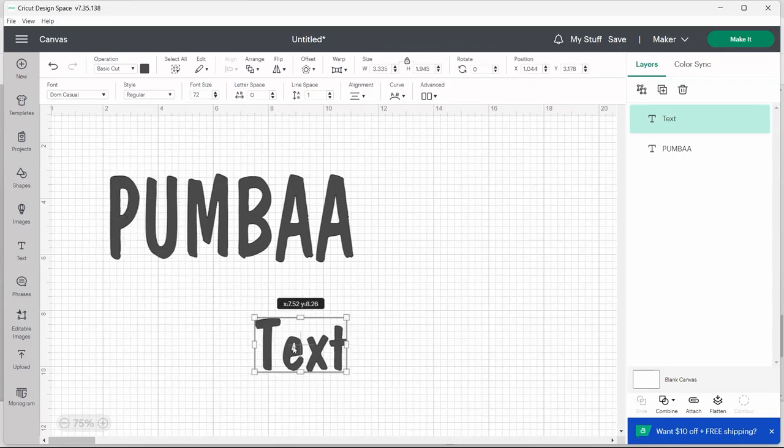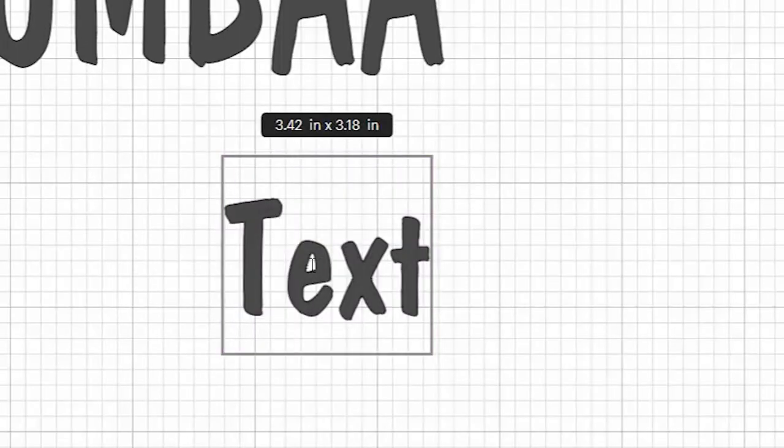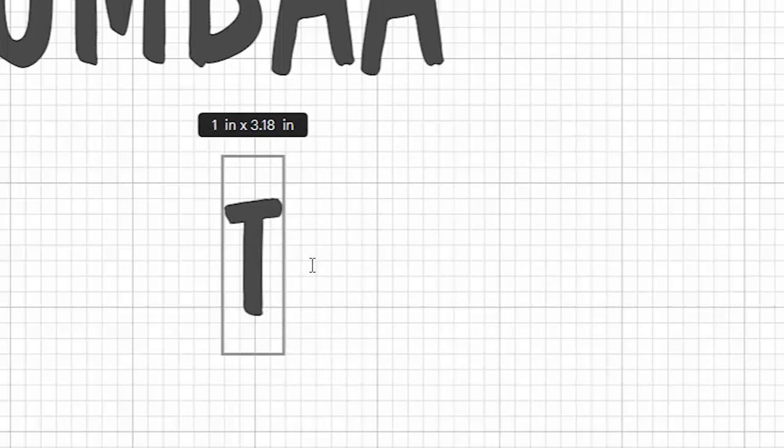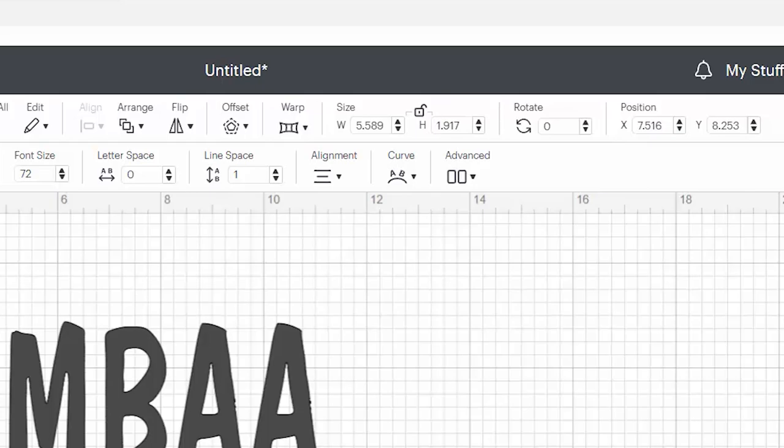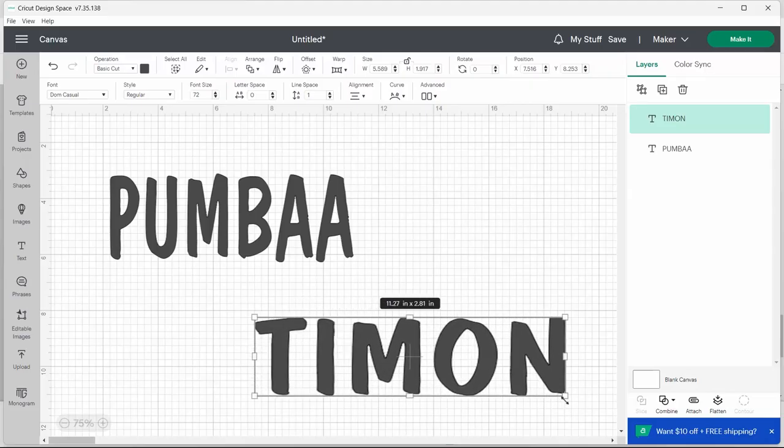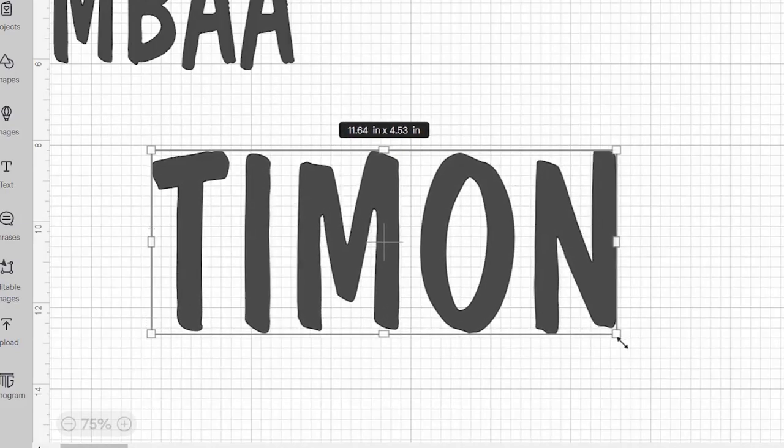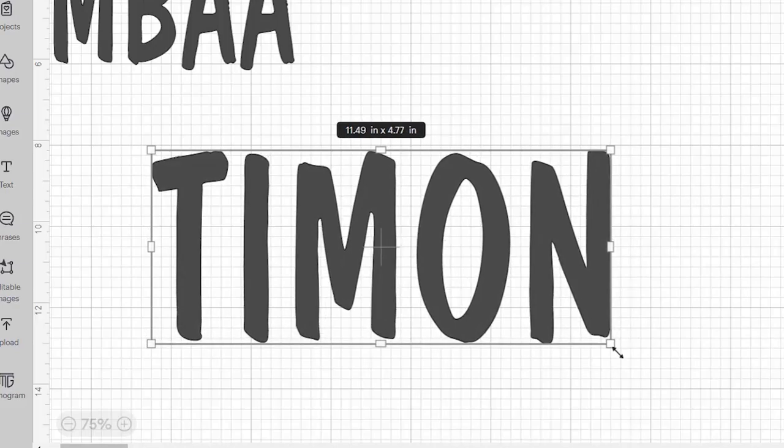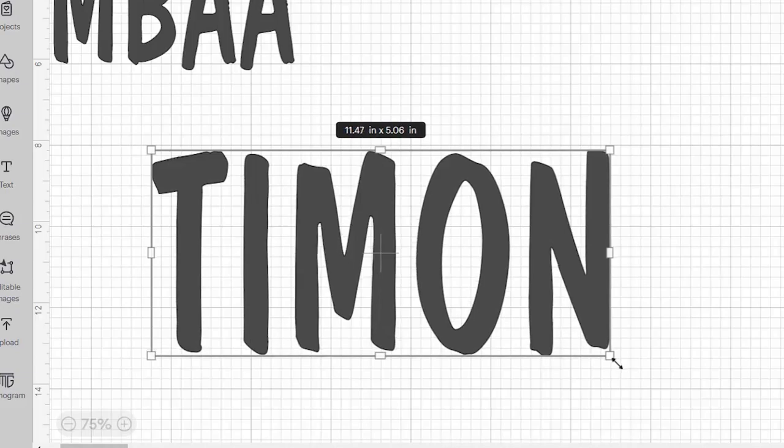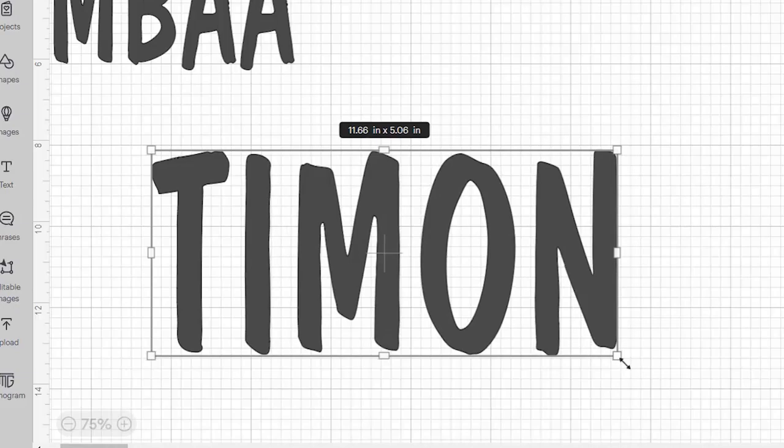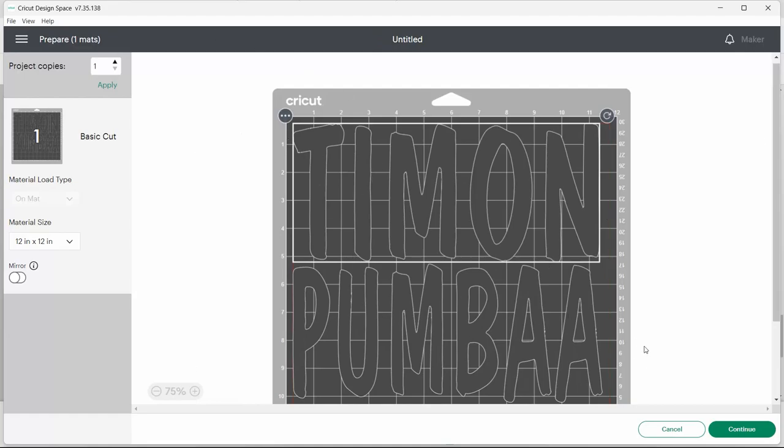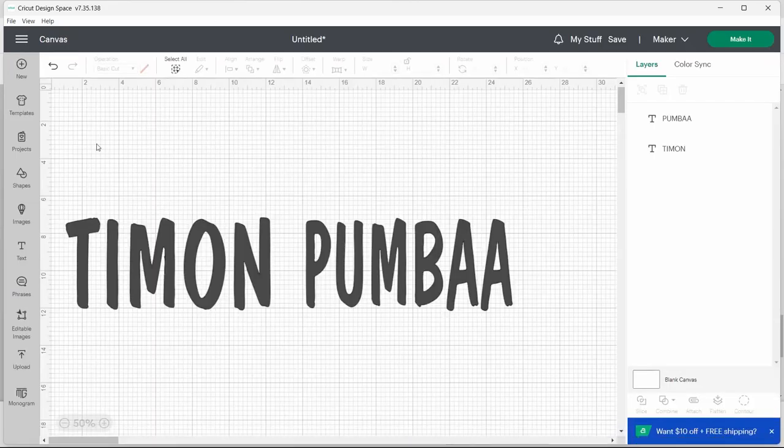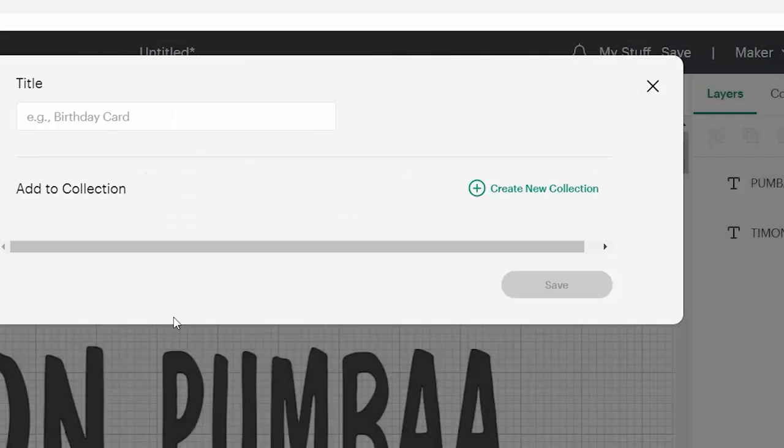So I have Pumbaa done, so now I'm going to do the big horse and his name is going to be Timon. So again I'm going to resize that. I'm going to unlock it at the top and then resize the name. By unlocking it at the top, this allows me to change not only the width but also the height of the lettering. I'm going to hit make it and that's what it'll look like when I cut it out on my Cricut machine. I'm happy with the sizing so I'm going to save this file so I can open it on my laptop computer next to my Cricut machine.